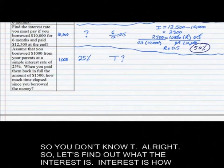Let's find out what the interest is. Interest is how much you paid back minus initial amount. So it's going to be $1,500 minus 1,000. You paid $500 in interest. Let's write that down. I equals 500 equals PRT. P is 1,000. R is 0.25. T is you don't know.